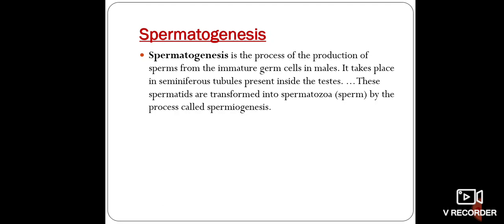Spermatogenesis is the process of production of sperm from the immature germ cells in the male. This phenomenon takes place in the seminiferous tubules, which are present inside the testes. In the seminiferous tubules, spermatids are formed from germ cells, and when these spermatids develop into mature sperm, this whole phenomenon is called spermiogenesis.